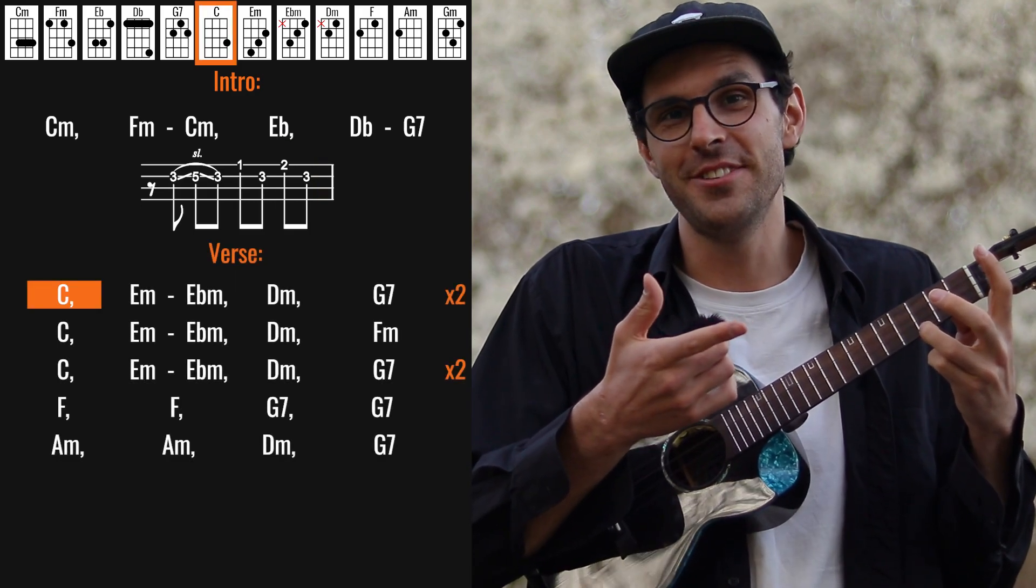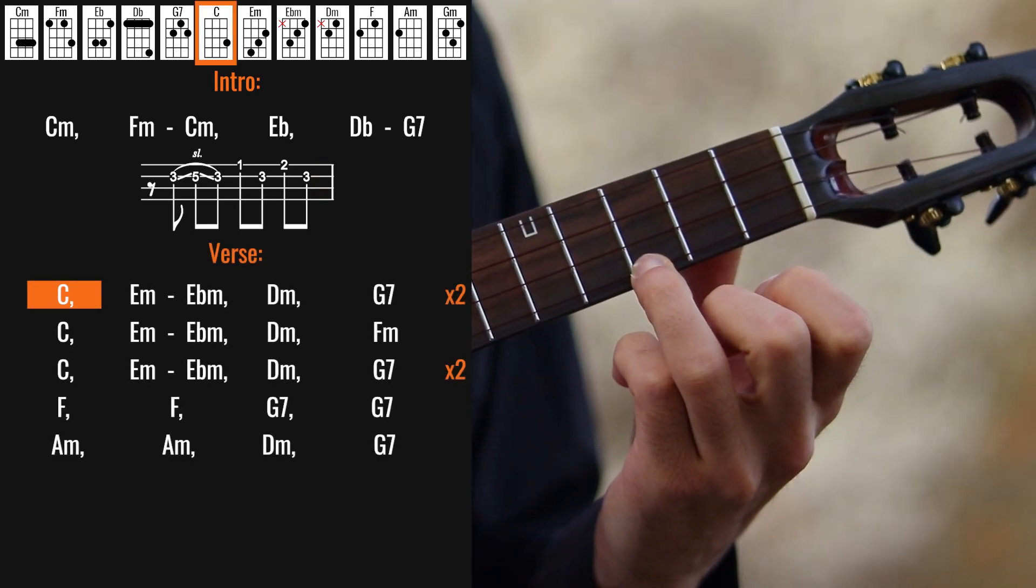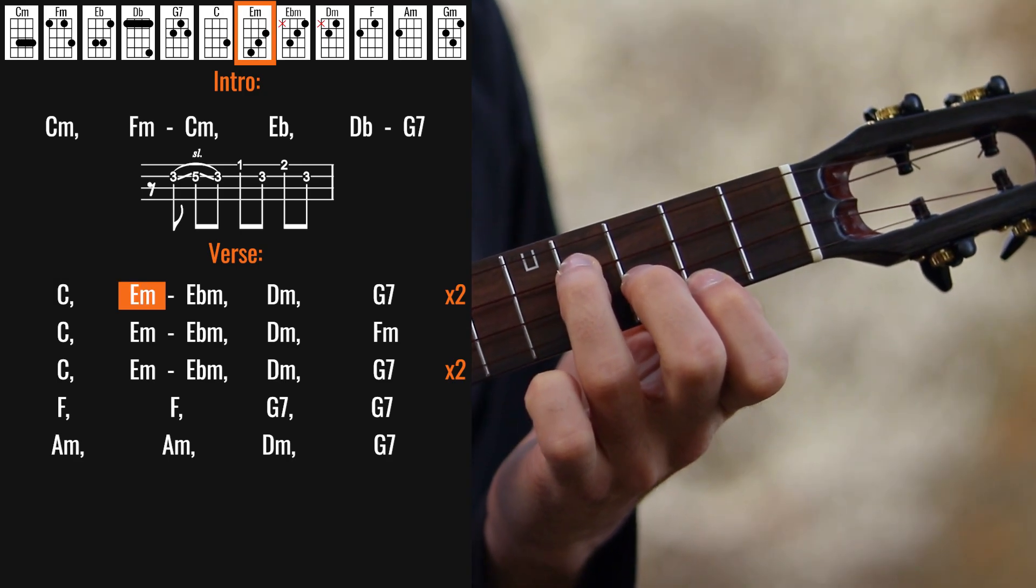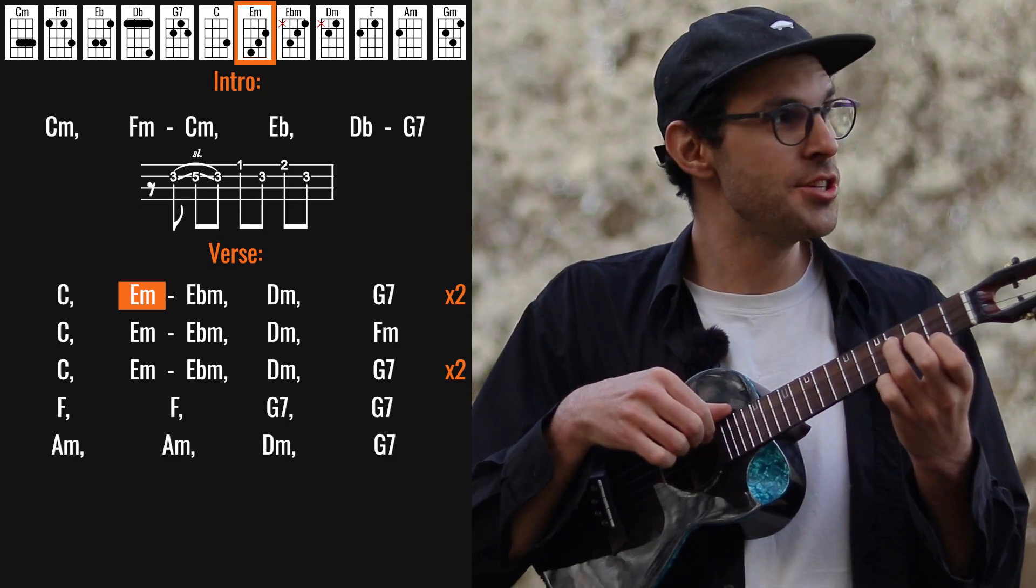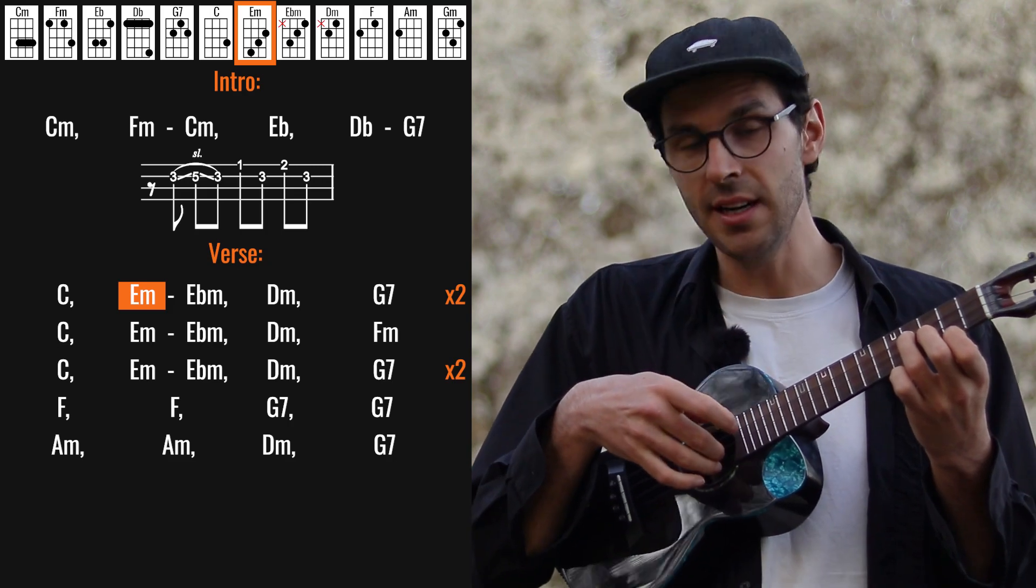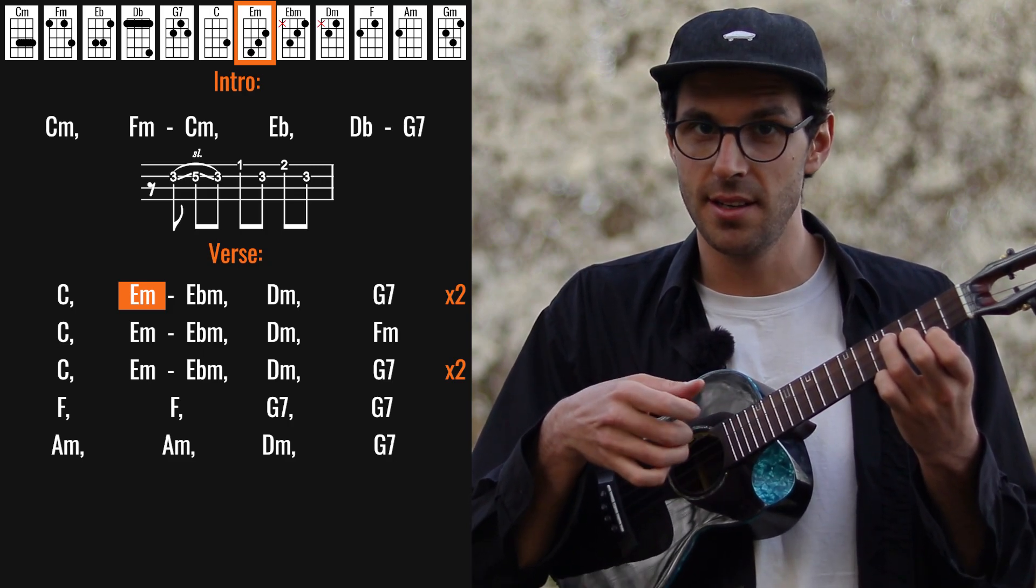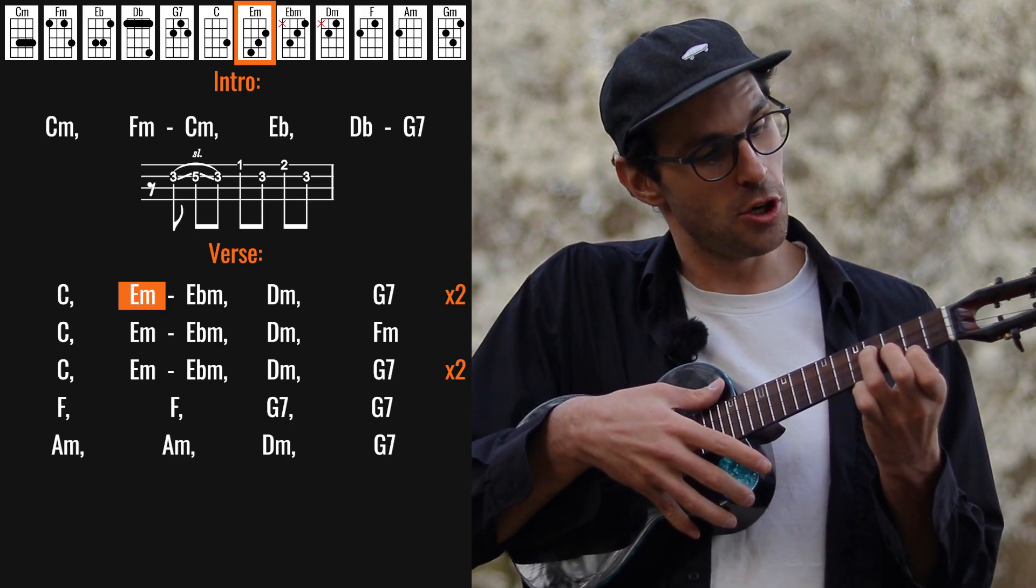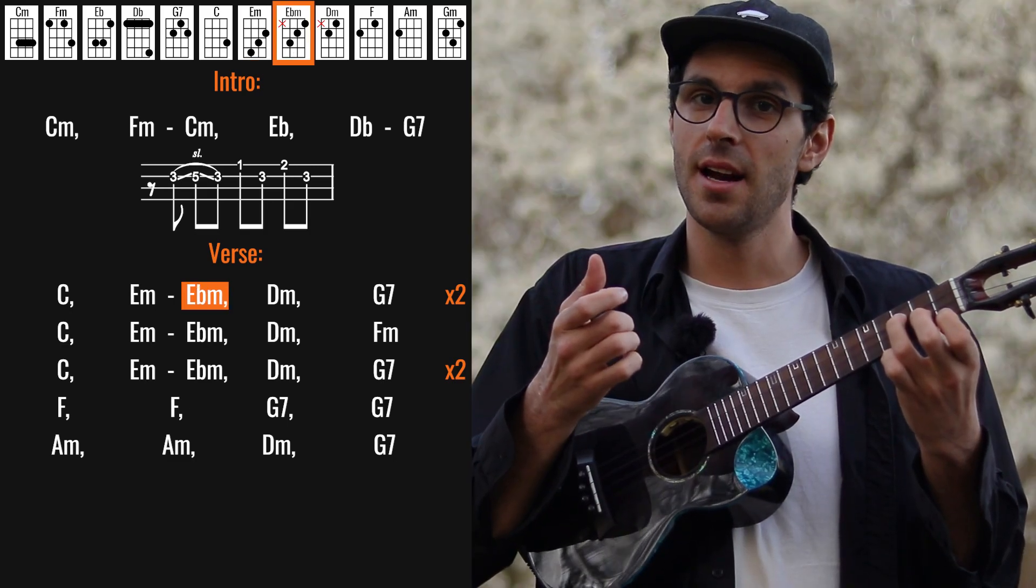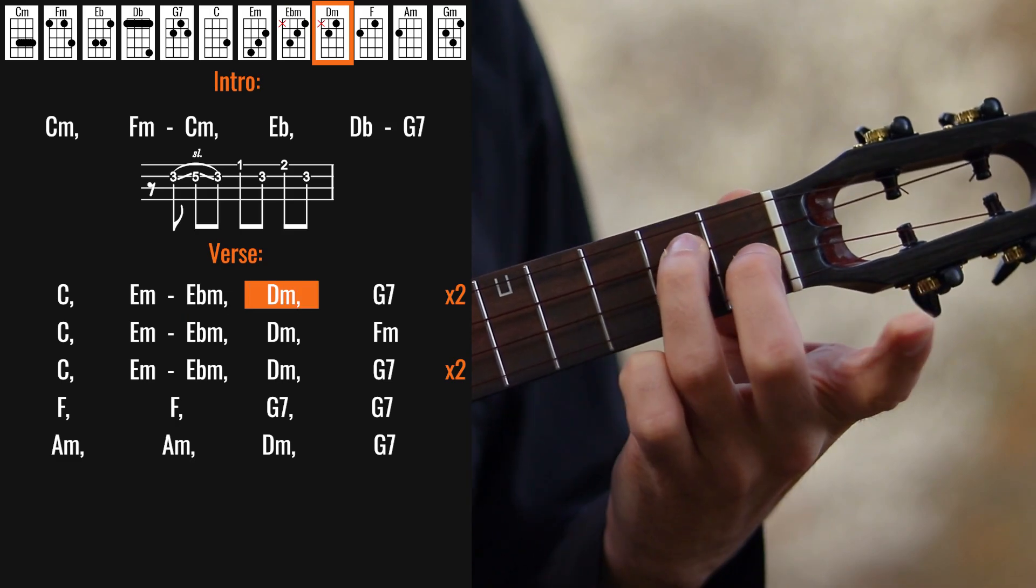And we start the verse which is C. On C I'm doing down, down, up, and then on E minor I'm playing with the pointing finger just the C string, and then with the middle finger and ring finger the E and A string. And then I slide this whole shape one fret down and do exactly the same, and then one more fret down. And this is E minor, E flat minor, and D minor.